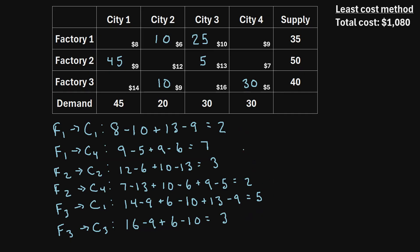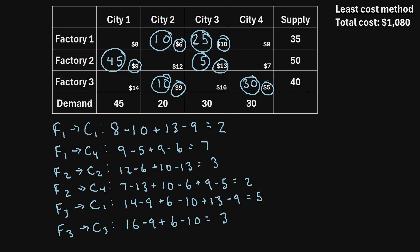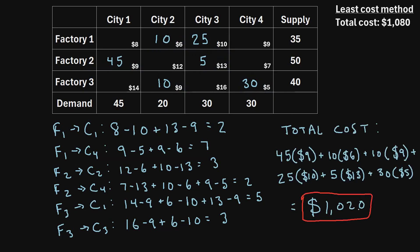To find the total shipping cost, we take the number of goods in each allocated cell and multiply by the unit shipping cost: 45 times $9, plus 10 times $6, plus 10 times $9, plus 25 times $10, plus 5 times $13, plus 30 times $5. The total optimal shipping cost is $1,020, which is less than the $1,080 found using the least cost method. That is how we fulfill the demand of each city while minimizing the total shipping cost using the stepping stone method.